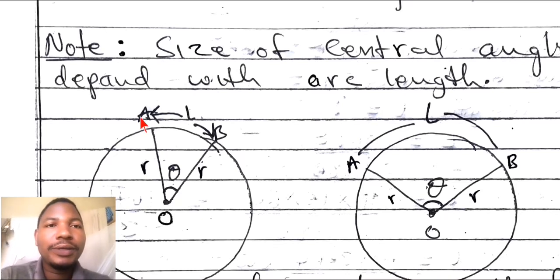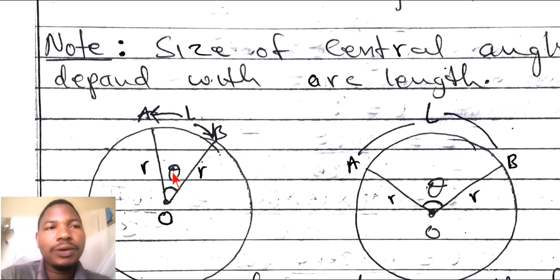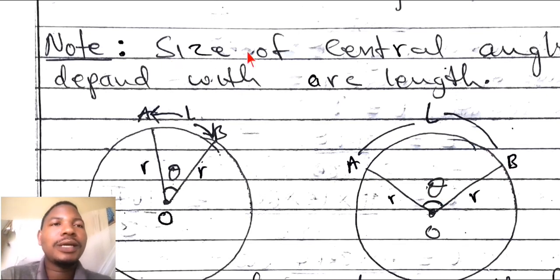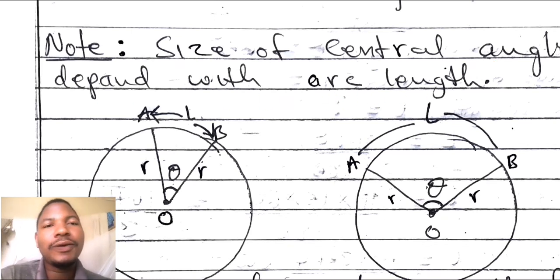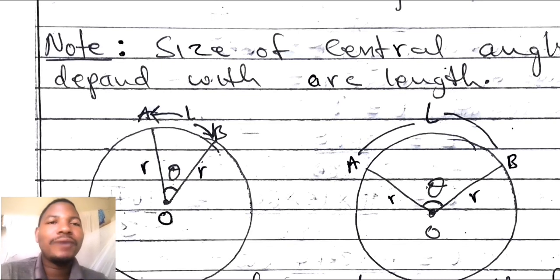For instance, I will take this arc AB — this arc AB is too small, therefore its angle here is too small also. But for this figure, check this arc AB — it is so large, therefore even this angle is so large. So take note: the size of a central angle depends on the arc length of that circle. If you have a large arc length, it creates a larger angle, and a small arc length will create a small angle. Vice versa is true also.